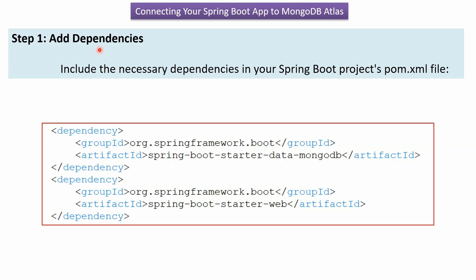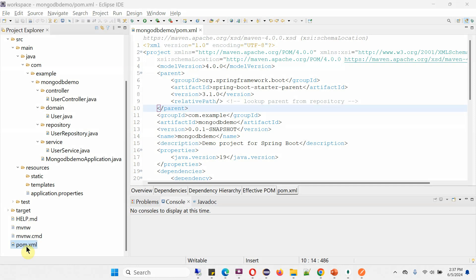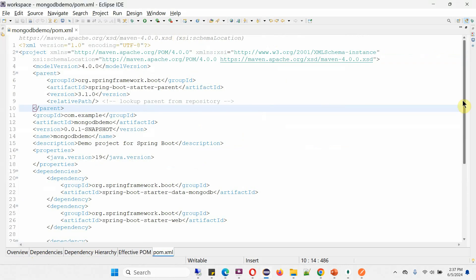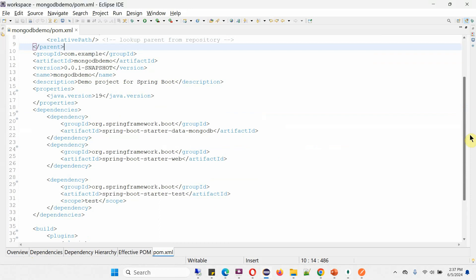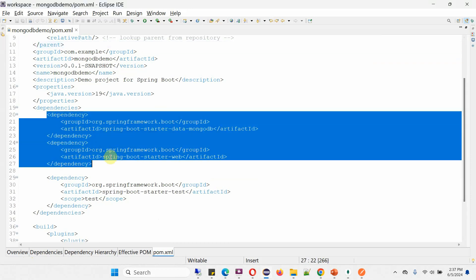Step one is to add dependencies. We have to add two dependencies in the pom.xml file: the first one is spring-boot-starter-data-mongodb, and the second one is spring-boot-starter-web. Here you can see the pom.xml file where I have included both of these dependencies.